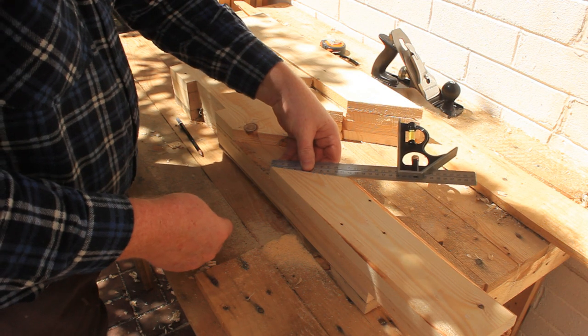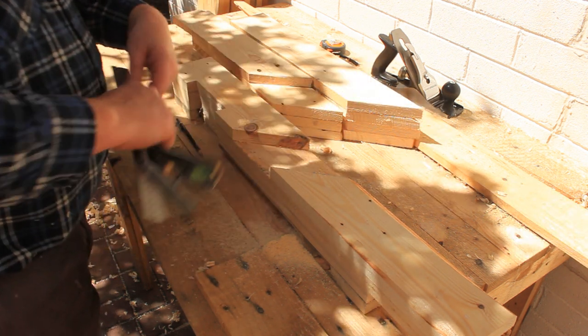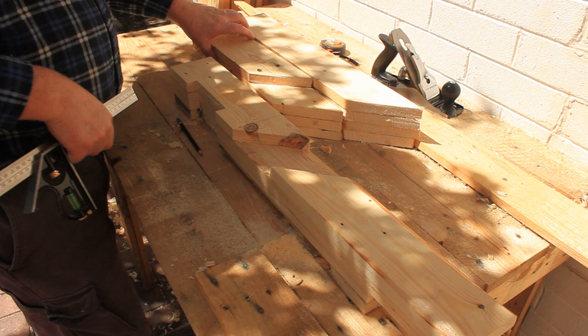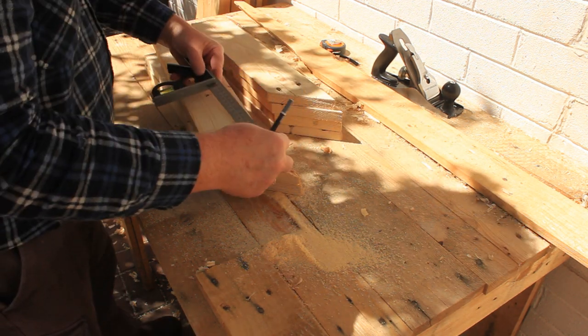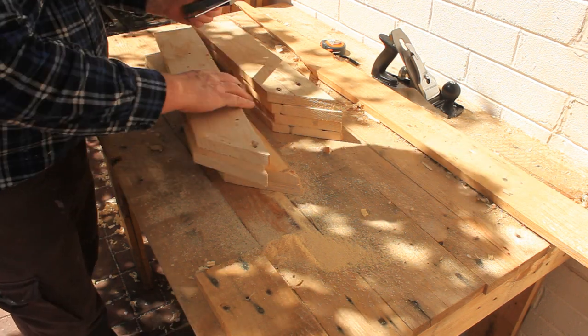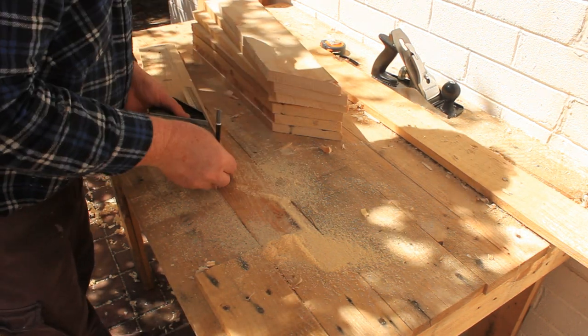Next take one of your completed bench legs and measure the length of its diagonal trench. If you're using a standard e-pallet this should be about 125 millimeters, five inches. Use that measurement to mark a 45 degree line across the end of your long boards.